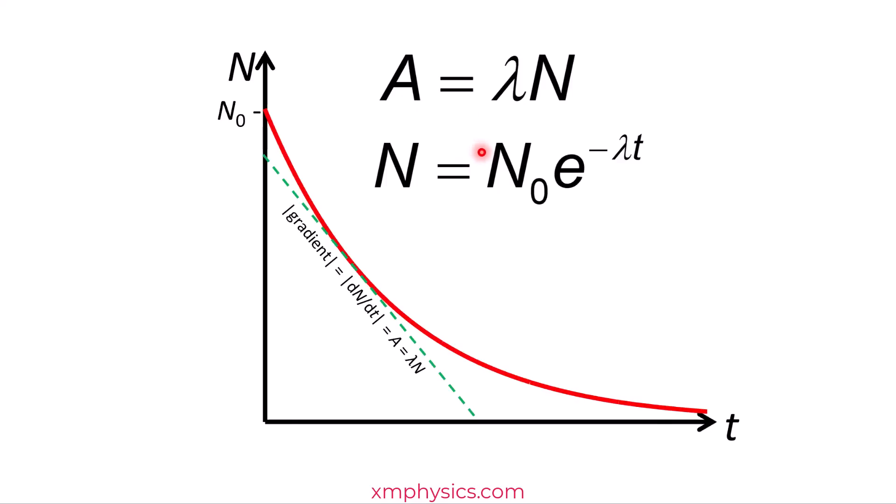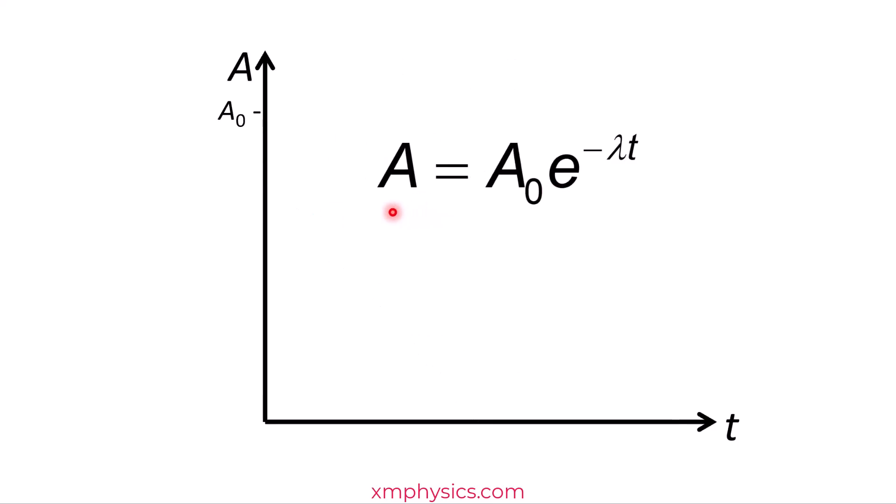In fact, if we stick lambda to both sides of this equation, you will realize that lambda N0 is actually the initial activity at time t is equal to 0. And lambda N is just the activity at any time t. So we have A is equals to A0 e to the power of negative lambda t. So besides N, A also decreases exponentially with time.